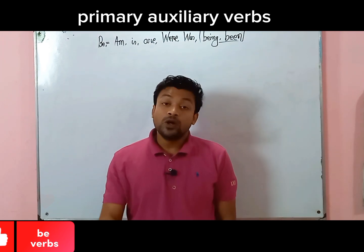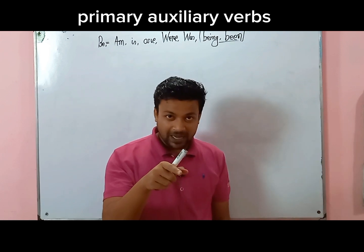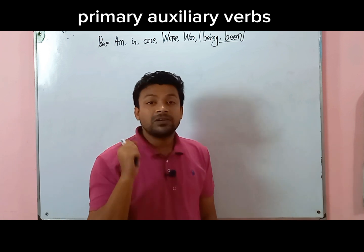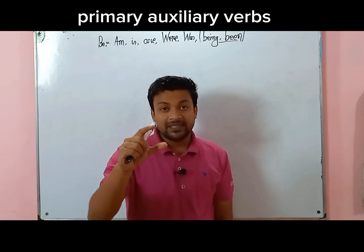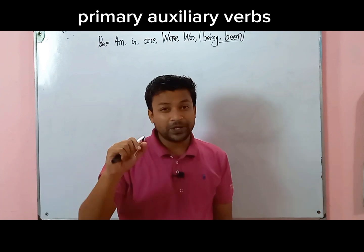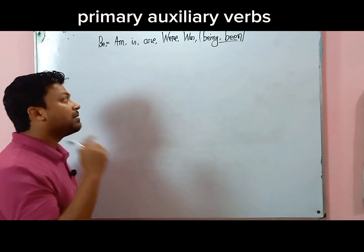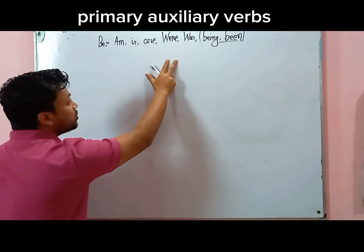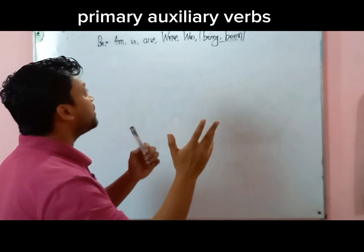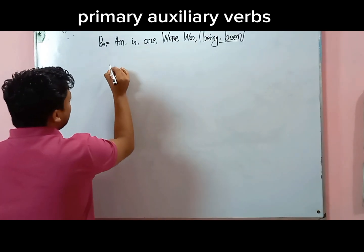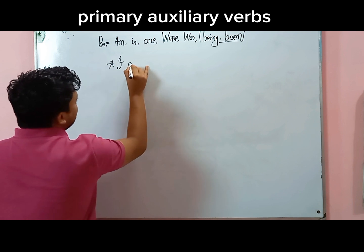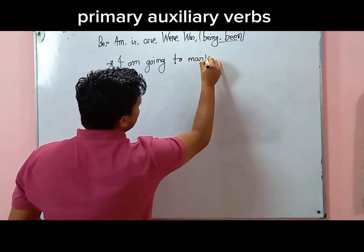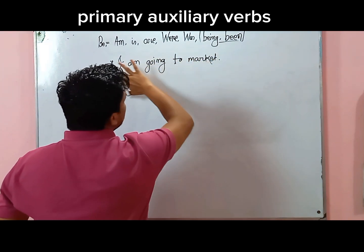These verbs indicate when an action happens — that is what we call tense. We have done many classes on tense before. From a tense standpoint, these auxiliary verbs are used to indicate the time of occurrence of an action. When these verbs are used meaninglessly, they only serve to indicate tense timing. For example: 'I am going to market' — here 'am' is used specifically in present continuous tense.